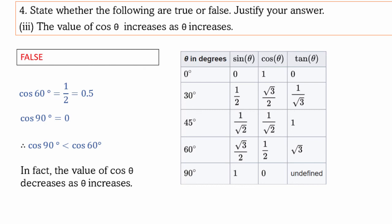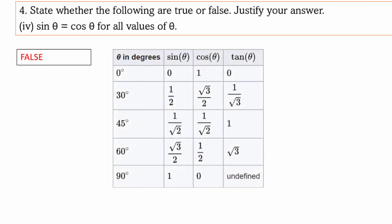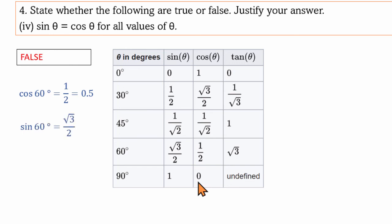Third sub-part of the fourth question: sinθ equals cosθ for all values of θ. This is obviously not correct. At 45° they are equal, but in all other values sinθ and cosθ are not the same. For example, cos60 equals 1 by 2 and sin60 equals root 3 by 2, which is not 1 by 2. So sin60 is not equal to cos60. This is false.